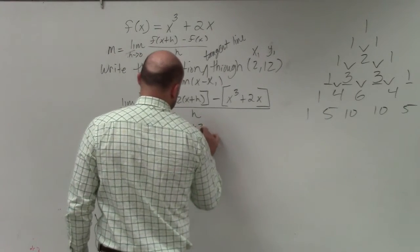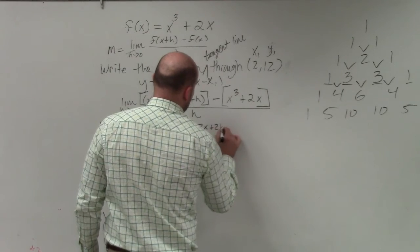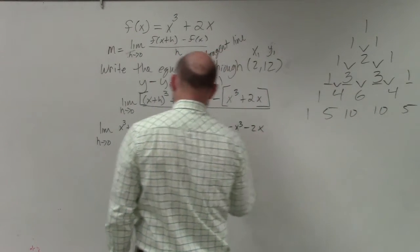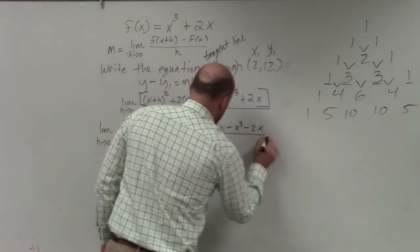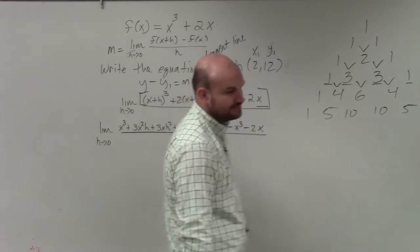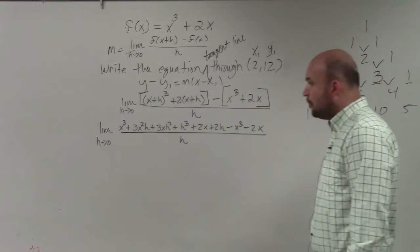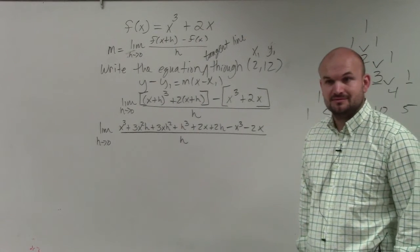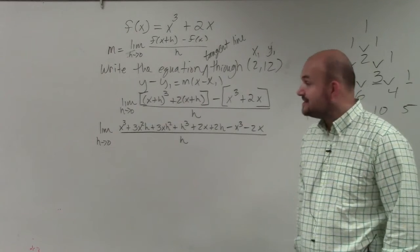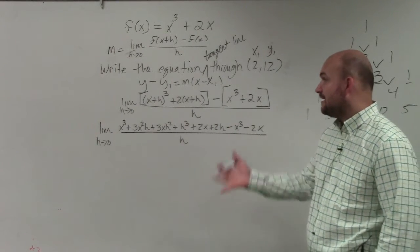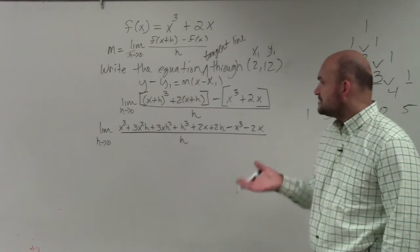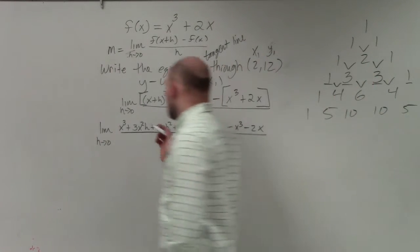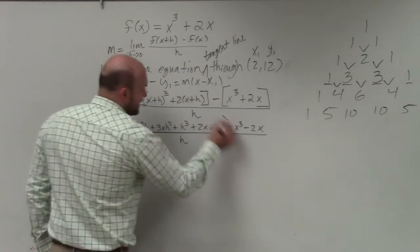Plus 2x plus 2h minus x cubed minus 2x all over h. Which looks like a lot, right? But what is nice about this is we can now start seeing, now that I have everything expanded, let's start looking at things that subtract out. Well, I have an x cubed and a minus x cubed.